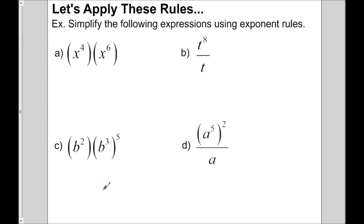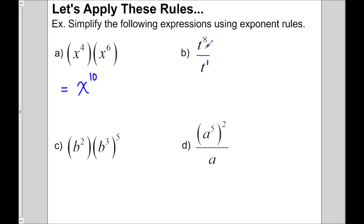Let's do some examples. x to the 4 times x to the 6: they're the same base and they're multiplying, so we add the exponents — 4 plus 6 gives us x to the 10. Here we have t to the 8 divided by t. There's no visible exponent, but there is an invisible 1. When powers are dividing with the same base, we subtract: t to the 8 divided by t to the 1 is t to the 7.